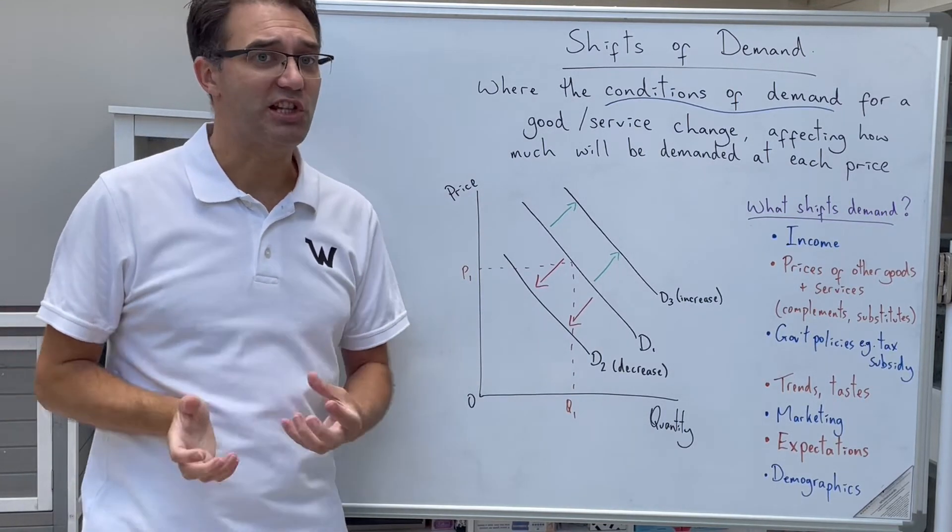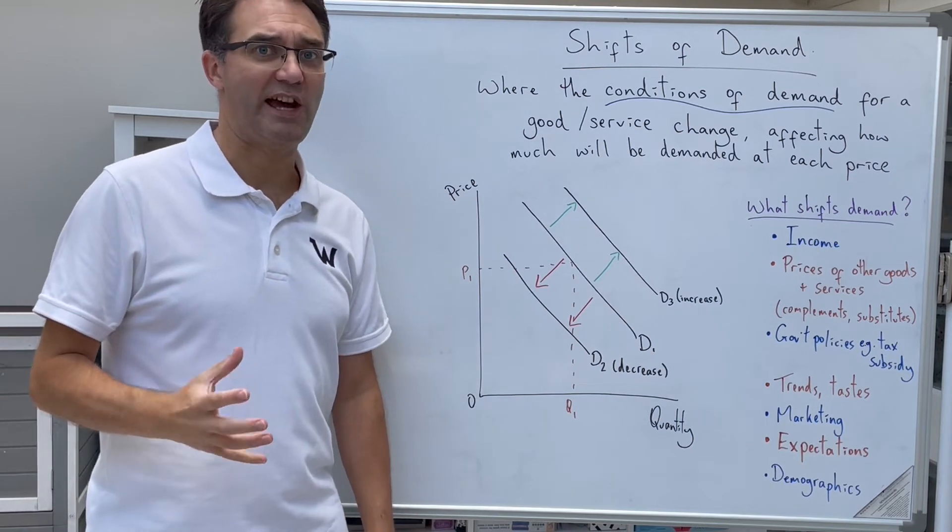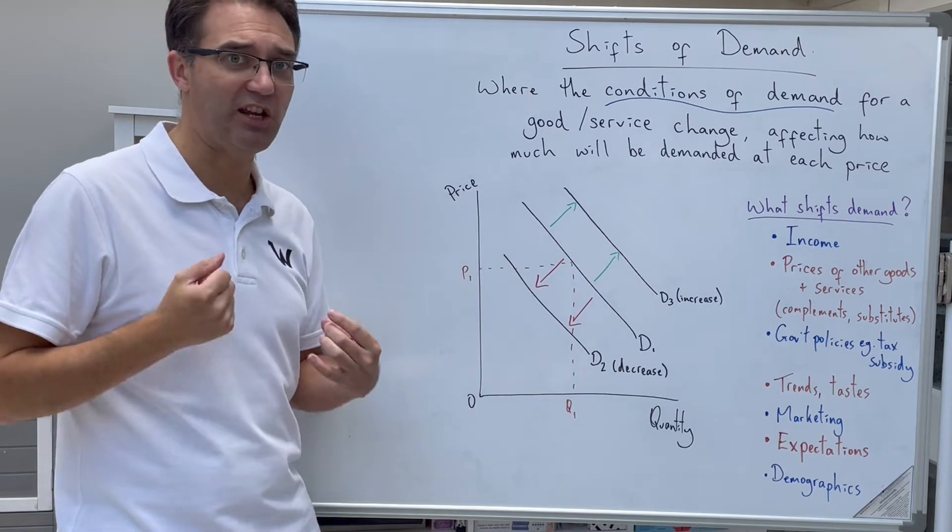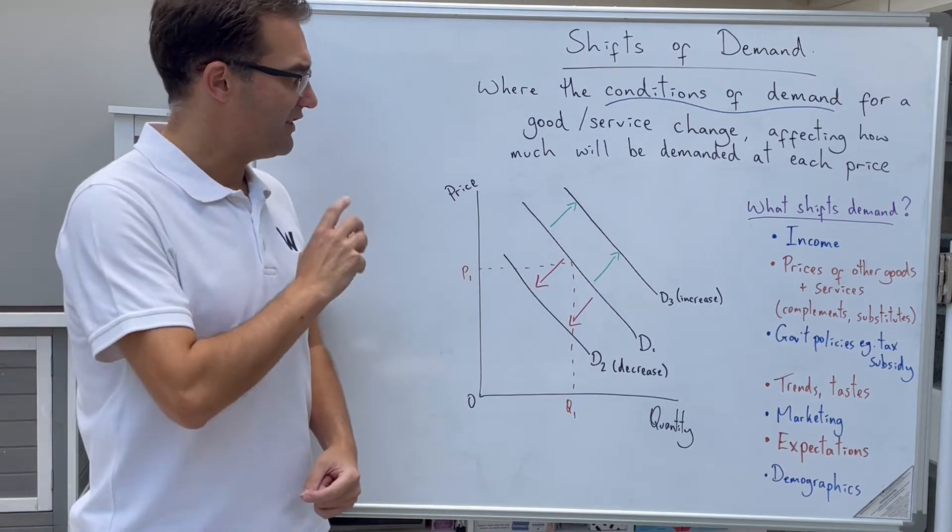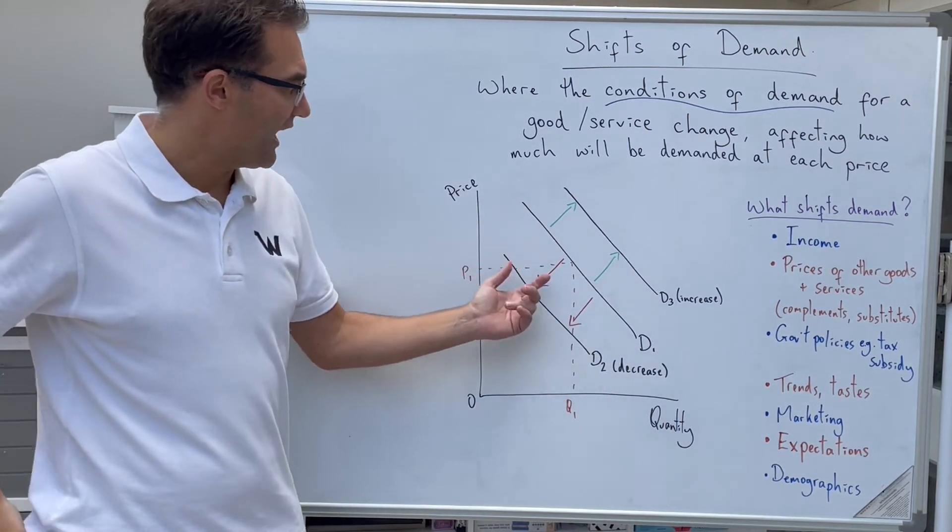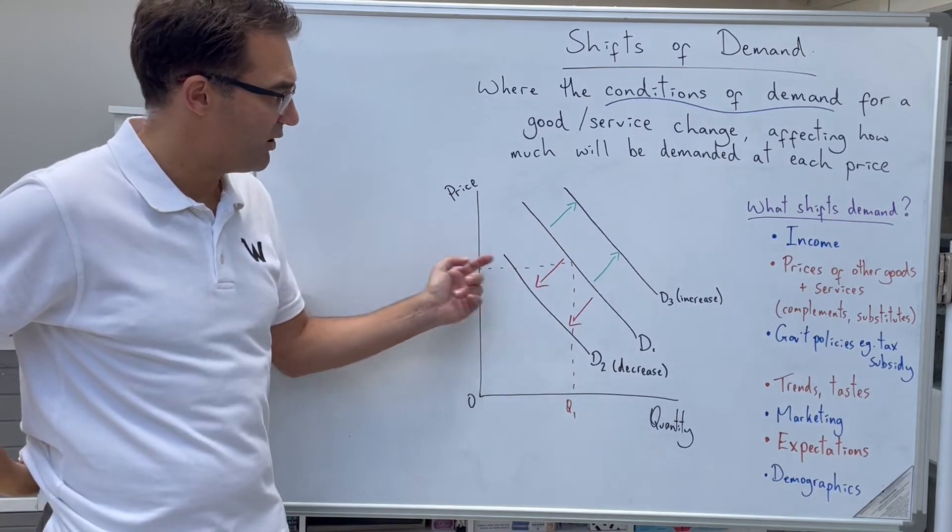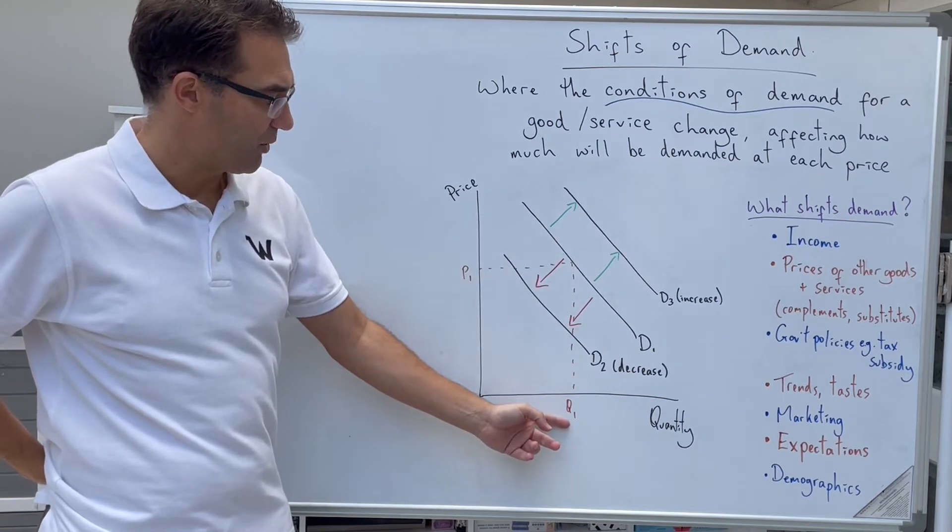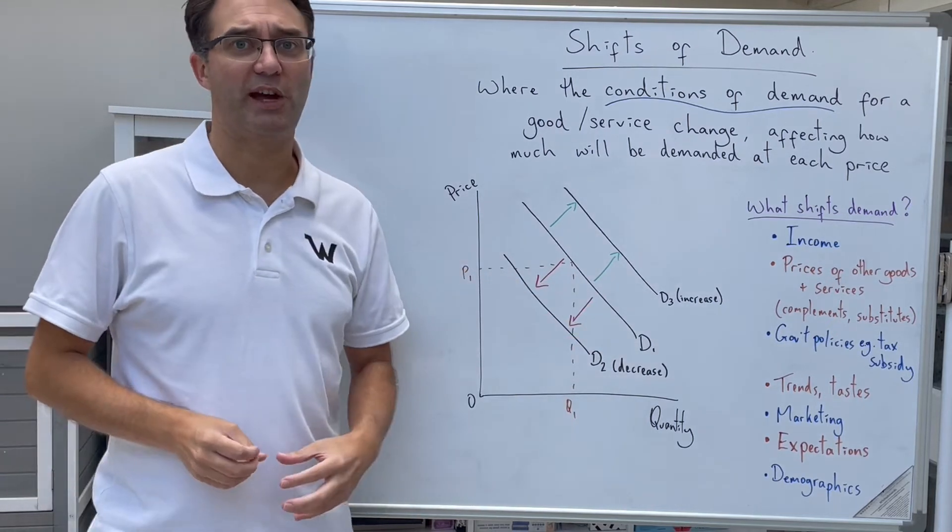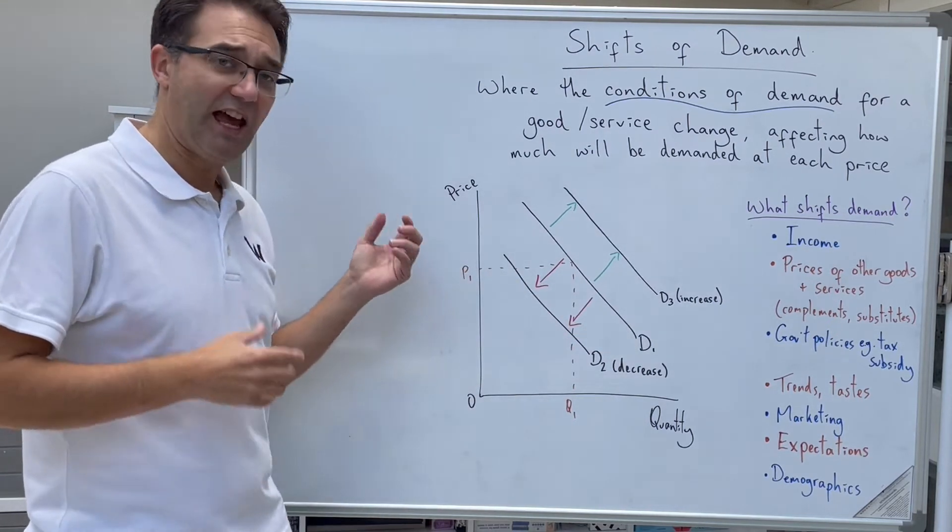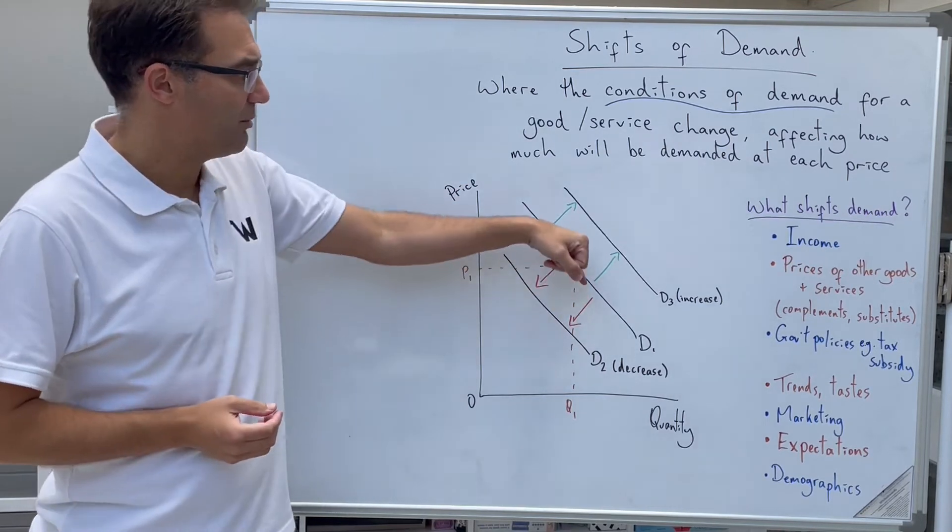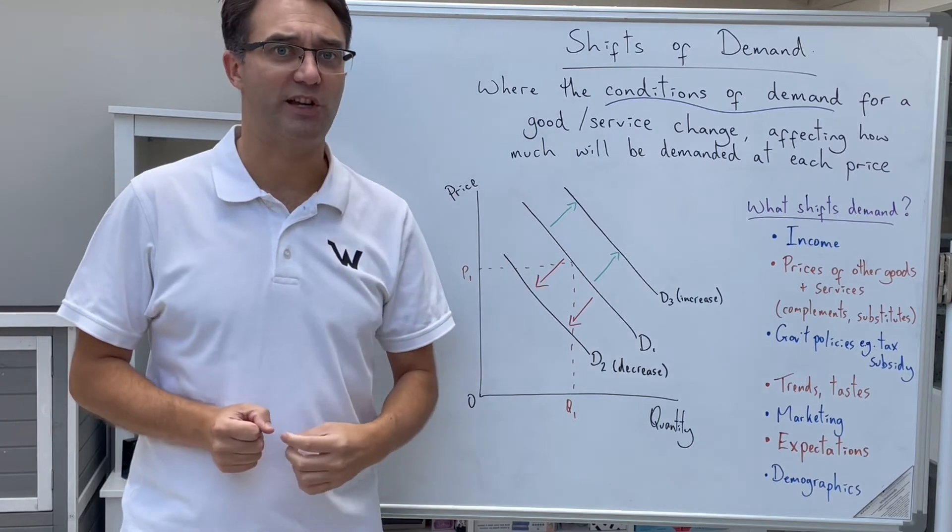Conversely, if conditions change and people are more willing and able to buy that good or service, we can show that through a shift outwards of the demand curve, an increase in demand. And this would be shown by D1 moving out to D3. What we have here is at the original price of P1, people would have been willing to buy Q1. Circumstances change, they're now willing to buy much more than they were previously, and it would follow that that would be the same across all prices.